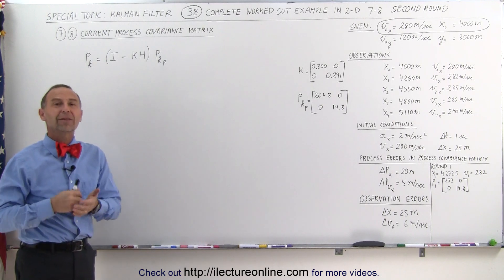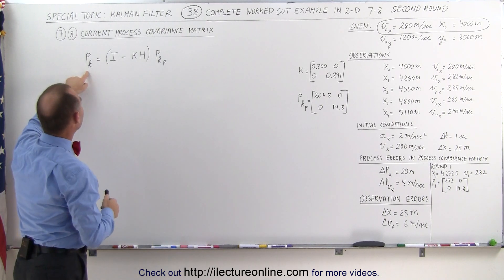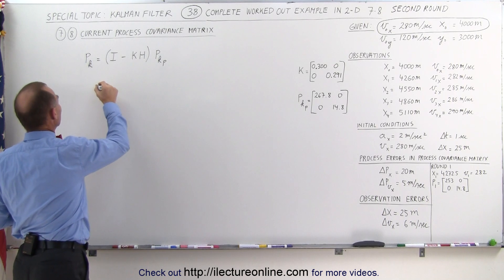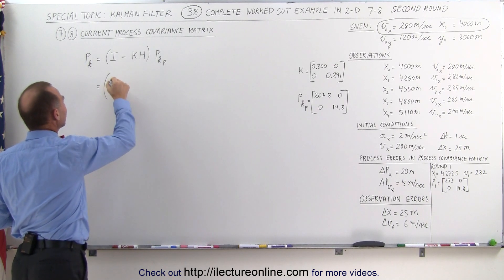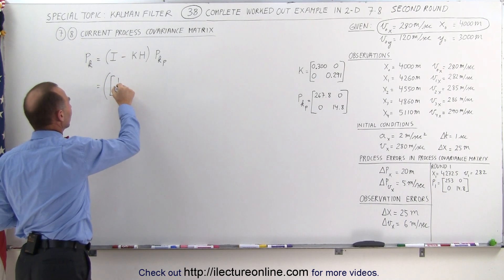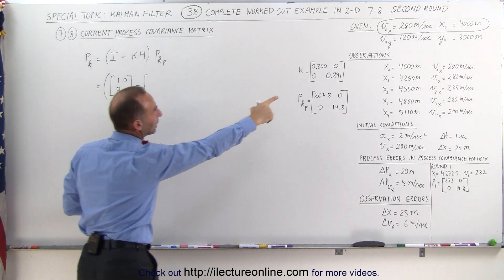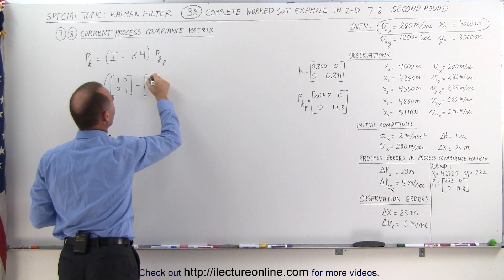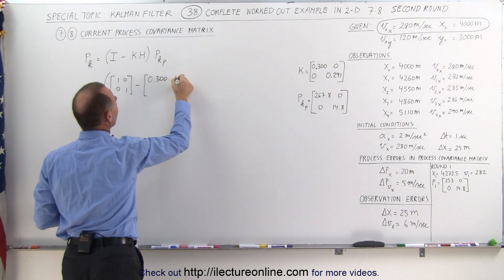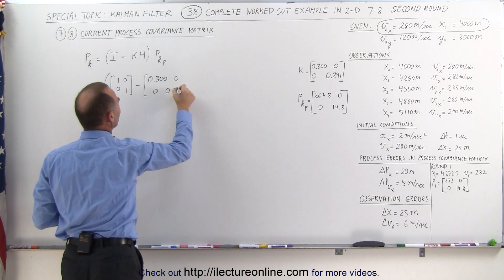For round three, here's the equation. Current process covariance matrix is equal to the identity matrix, ones and zeros, minus the Kalman gain. The Kalman gain that we calculated on this round was 0.300 and 0.291.